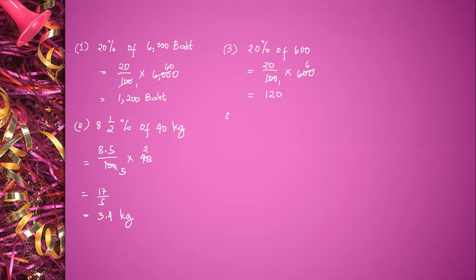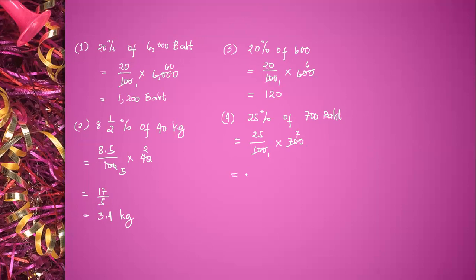Number four: 25% of 700 baht is equal to 25 divided by 100 times 700. 700 divided by 100 is equal to 7. 7 times 25 is equal to 175 baht.